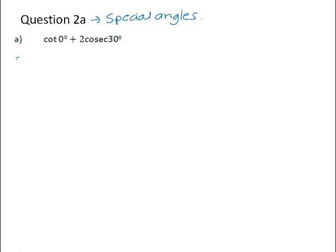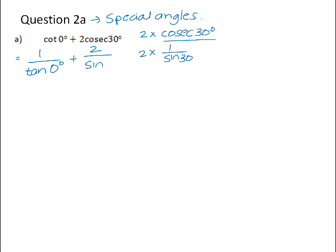When we are given reciprocal ratios, it is always a good idea to start off by writing those as your standard trig ratios. So cot θ is 1 over tan, so it will be 1 divided by tan 0. And 2 cosec of 30 degrees means 2 times the cosec of 30 degrees. And cosec of 30 degrees is 1 over sin of 30 degrees. So that leaves us with 2 divided by the sin of 30 degrees.